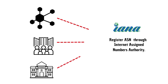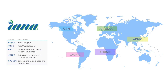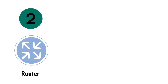Acquiring an AS number involves a straightforward process. The Internet Assigned Numbers Authority (IANA) is responsible for assigning ASNs to regional internet registries. These RIRs in turn distribute the ASNs to ISPs and networks, including yours.